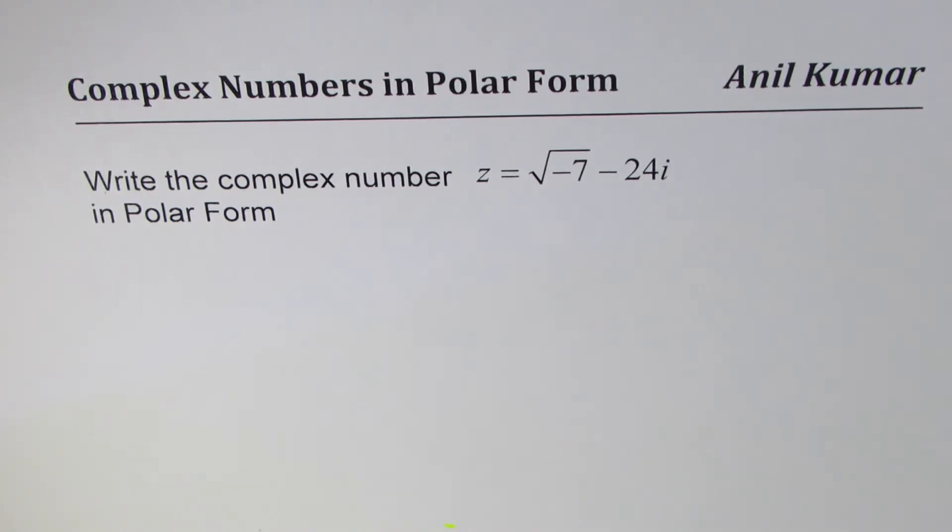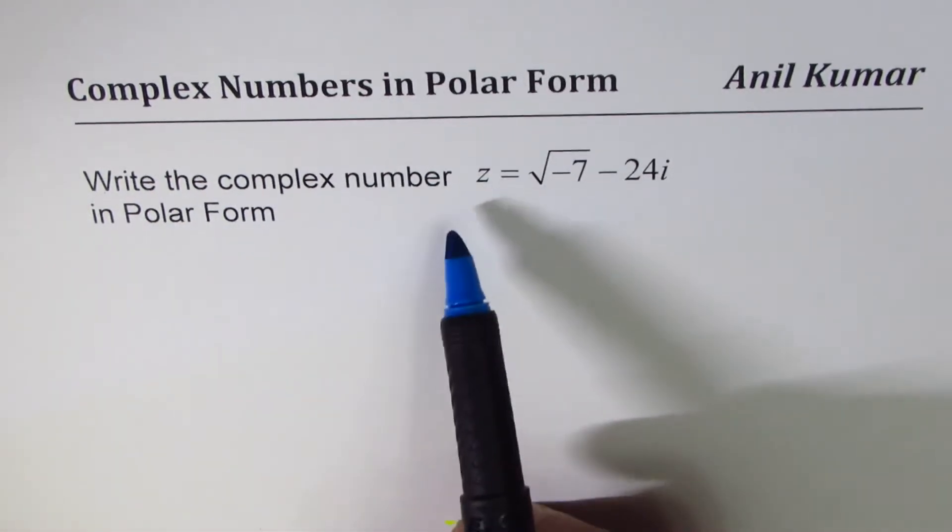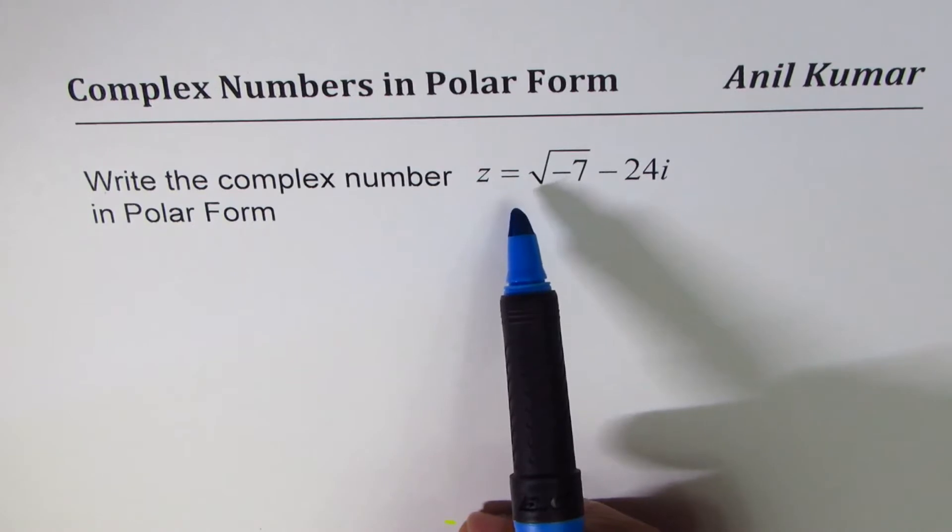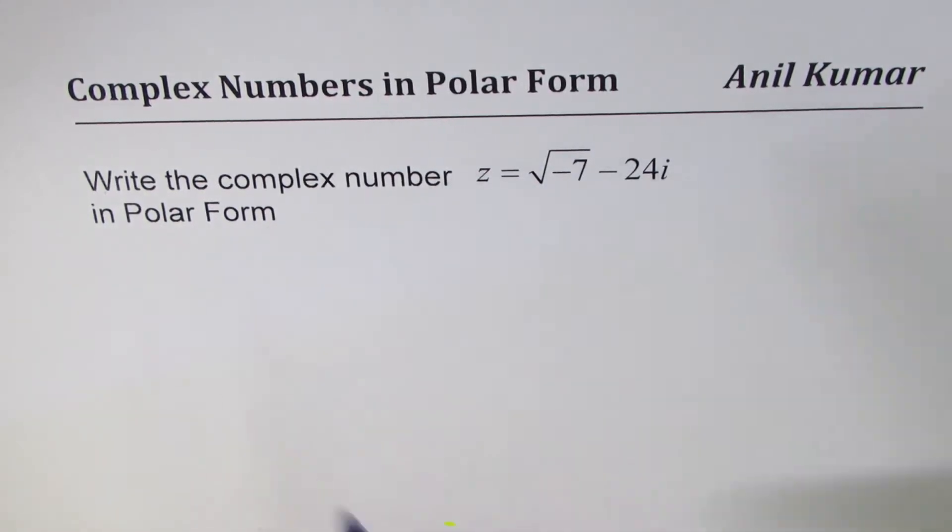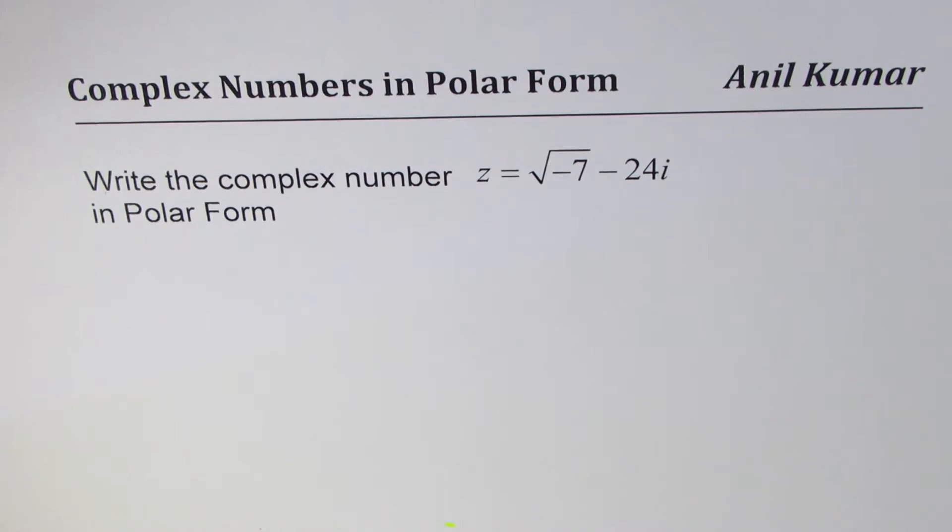This is a very good question. It says: write the complex number z equals square root of minus 7 minus 24i in polar form. That's the question for you. You can always pause the video, answer the question, and then look into my suggestions.